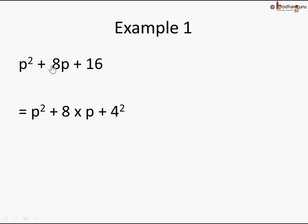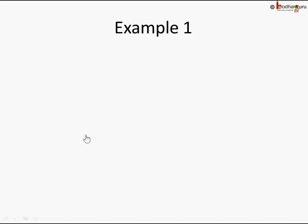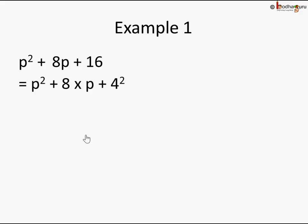So p² + 8p + 16 — we can write 16 as 4². Using Identity 1, this looks like a² + 2ab + b² where a = p and b = 4, since those are the square roots of the extreme terms. Now let's verify whether 2ab is also present. We rewrite: p² + 8p + 4² and then break the middle term as p² + 2×4×p + 4².